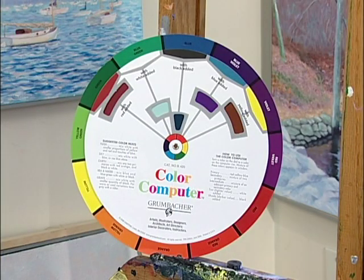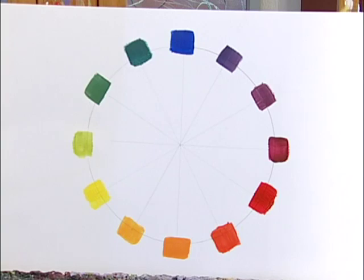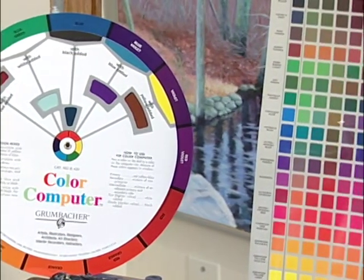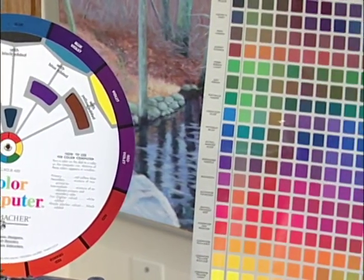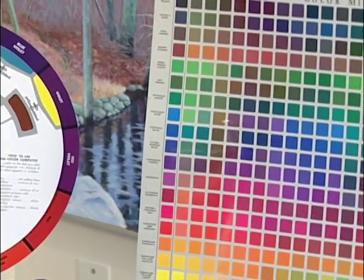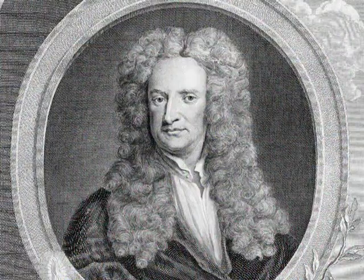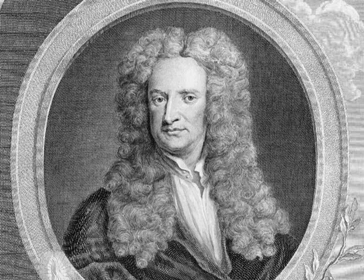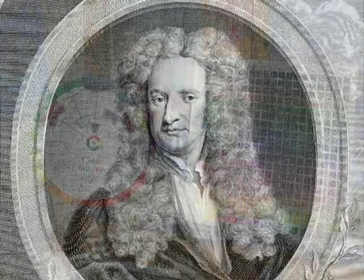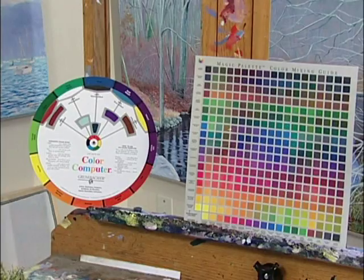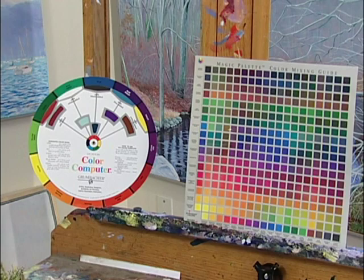The color wheel is simply an arrangement of hues put into a logical format. The color wheel was first formally developed by Sir Isaac Newton in 1666, and there have been many variations and versions developed since then.